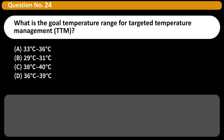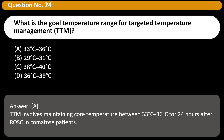What is the goal temperature range for targeted temperature management (TTM)? A. 33 to 36 degrees Celsius. B. 29 to 31 degrees Celsius. C. 38 to 40 degrees Celsius. D. 36 to 39 degrees Celsius. Answer: A. TTM involves maintaining core temperature between 33 to 36 degrees Celsius for 24 hours after ROSC in comatose patients.